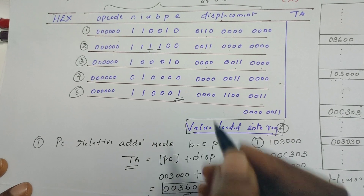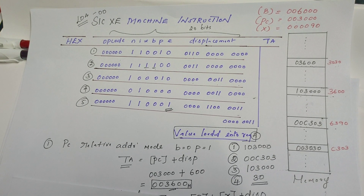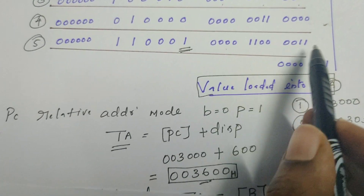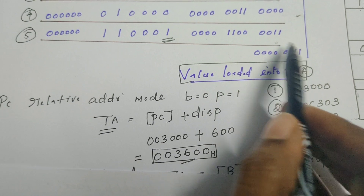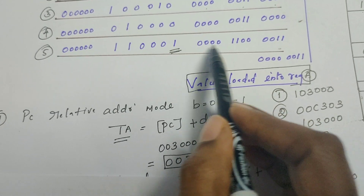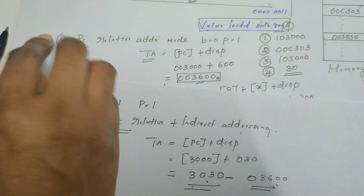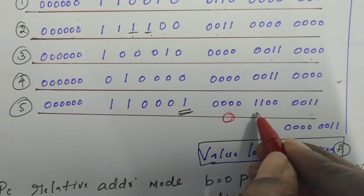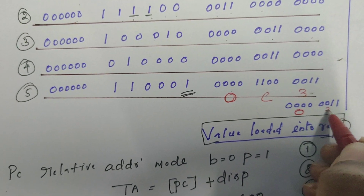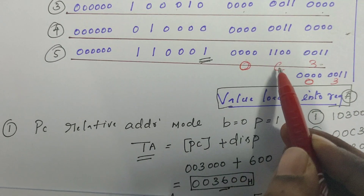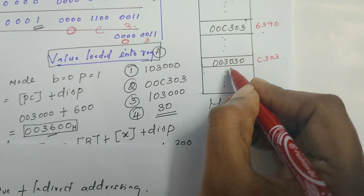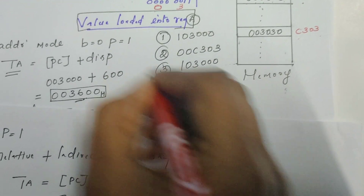In the last example, e is set to 1. When e=1 it refers to a format 4 instruction. Format 4 directly provides a 20-bit address field, allowing the complete address to be stored in the instruction. Converting the 20-bit field: the address is 0x0C303. Going to that address in memory, the data available is 0x3030, which is loaded into the accumulator for the fifth instruction.